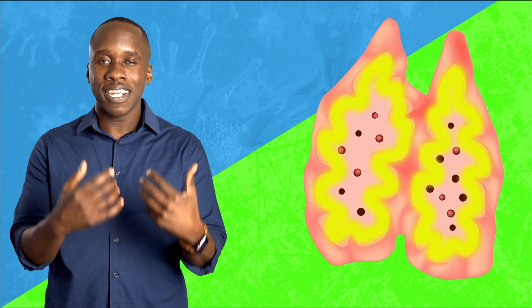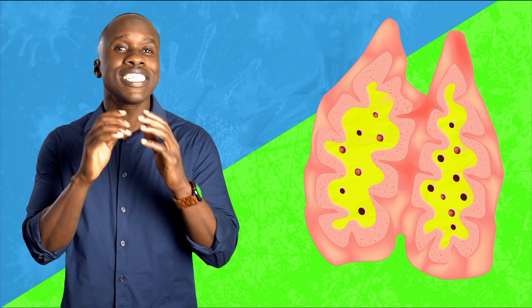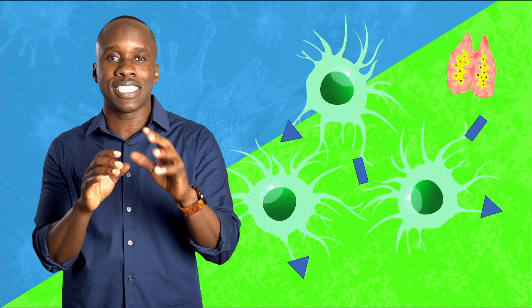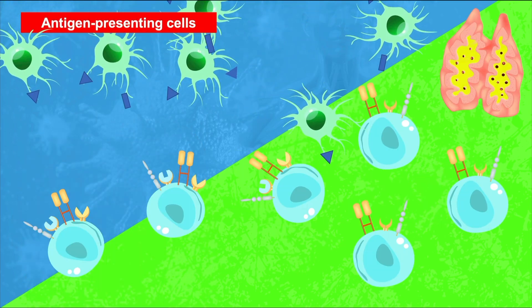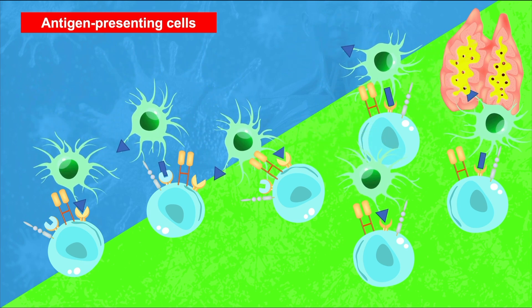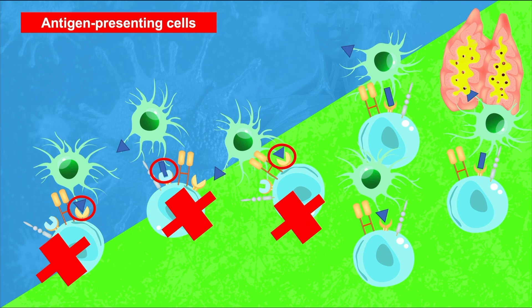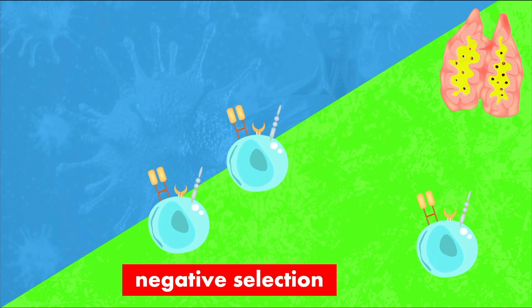The T cell will then go a little deeper and move to the medulla of the thymus. The T cells are then exposed to self-antigens. We don't want T cells to recognize and bind to antigens that are supposed to be present in the body. Self-antigens from other parts of the body are brought to the thymus by antigen-presenting cells. If a T cell receptor binds to and recognizes the self-antigen, they're targeted for destruction and killed by apoptosis. This is called negative selection — we're killing off T cells that recognize antigens of our own body tissues.